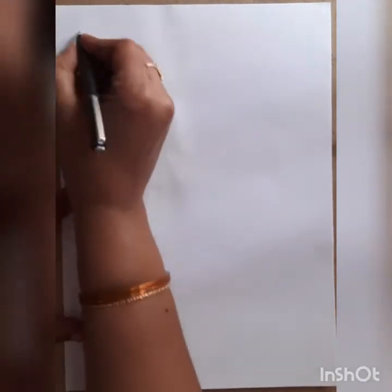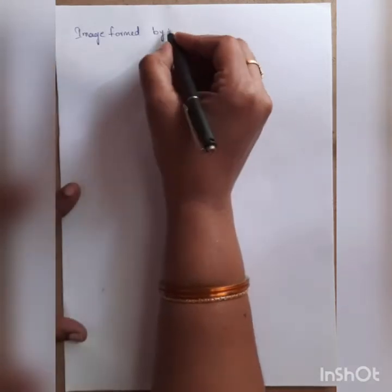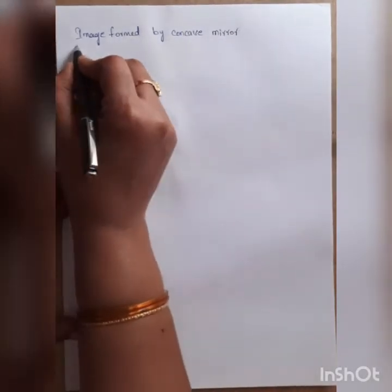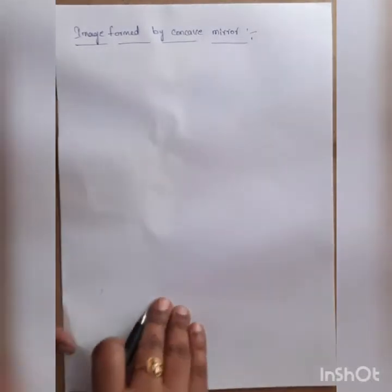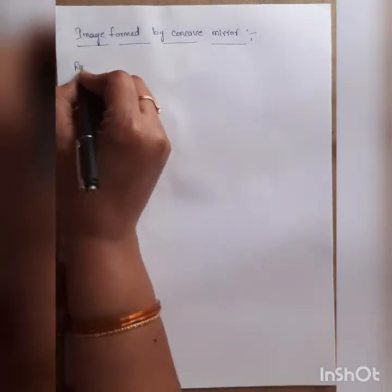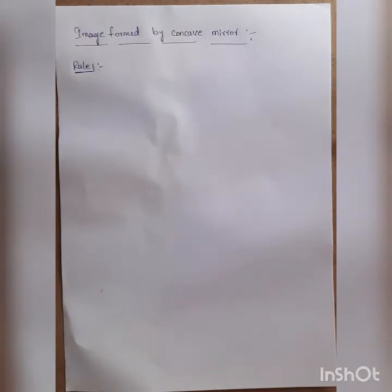Good morning students. Today we will discuss about the image formed by the concave mirror. There are three rules to draw the ray diagram of an image using the concave mirror. Rule one is: if an incident ray is parallel to the principal axis, then the reflected ray passes through the principal focus.